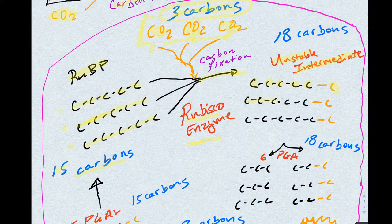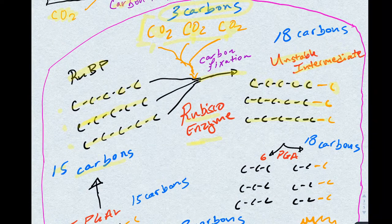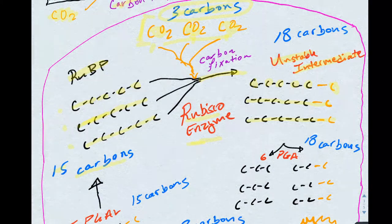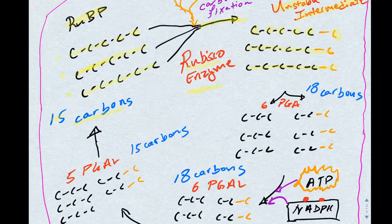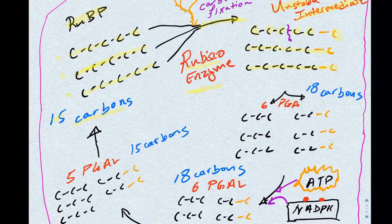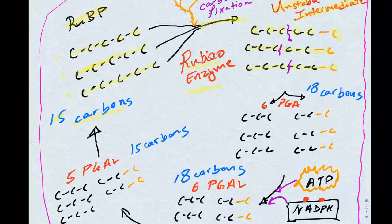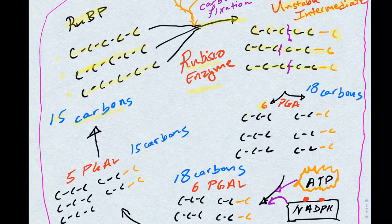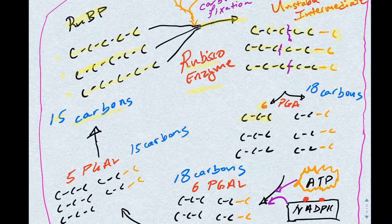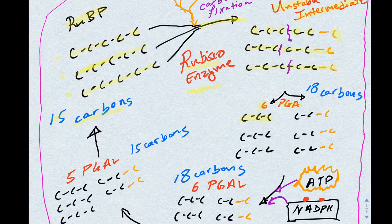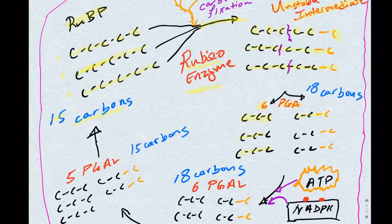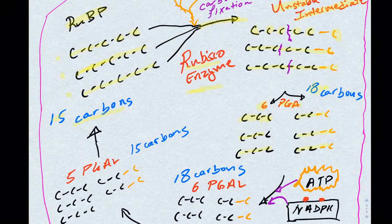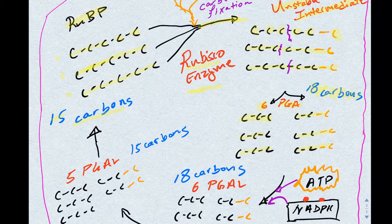We are following three of these molecules, and if we count up our carbons at the end of this step, we end up having 18 carbons. Because this is an unstable intermediate, it will split in half and give us six three-carbon molecules known as PGA. If we count up the number of carbons we have at this point, we have six three-carbon molecules for a total of still 18 carbons. That means we have not lost any carbons yet.